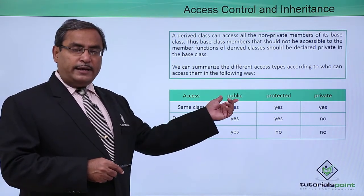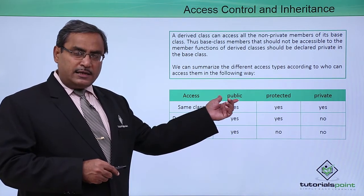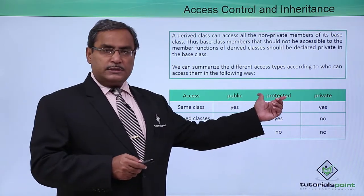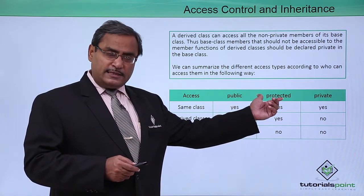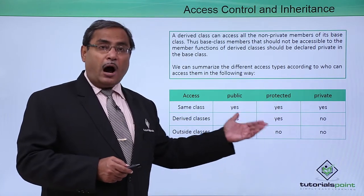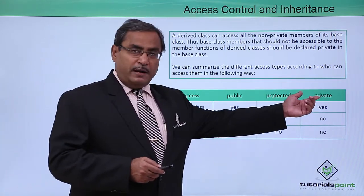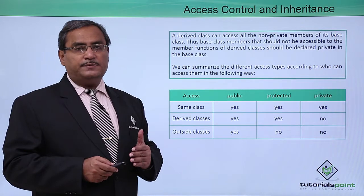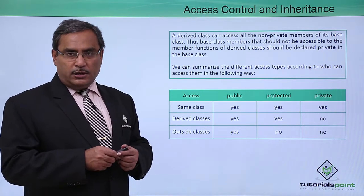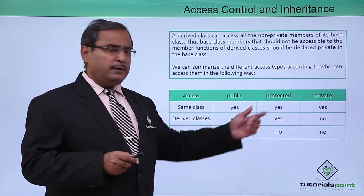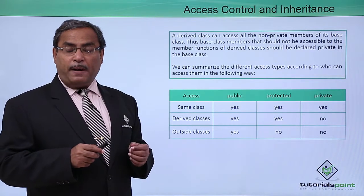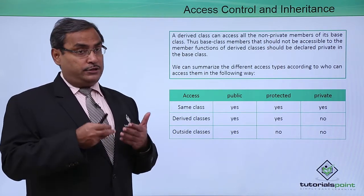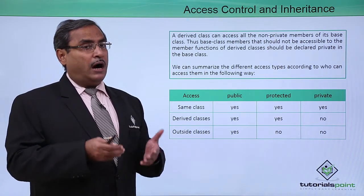Public members are inheritable, can be accessed within the class, and can be accessed outside of the class. Protected members are inheritable and can be accessed within the class, but cannot be accessed outside of the class. Private members are accessible from the class itself, cannot be inherited, and cannot be accessed from outside the class. In a gist, protected members are nothing but public members which are inheritable, and they are also like private members because they cannot be accessed from outside of the class.